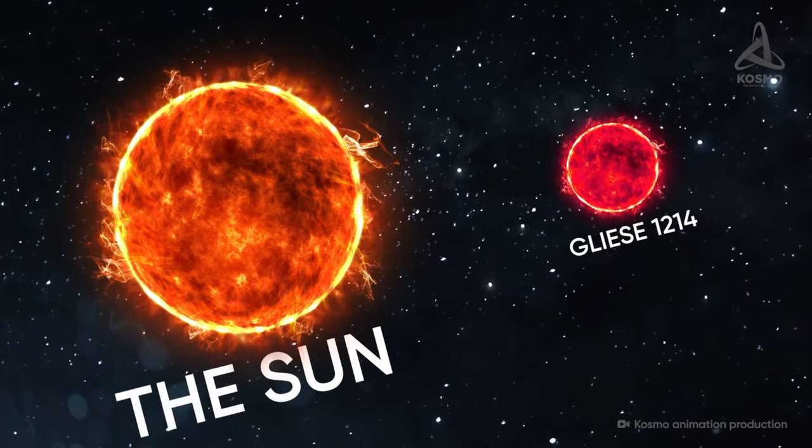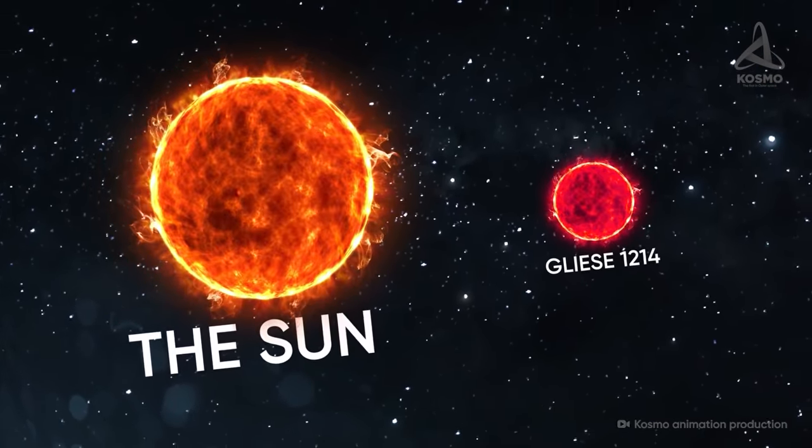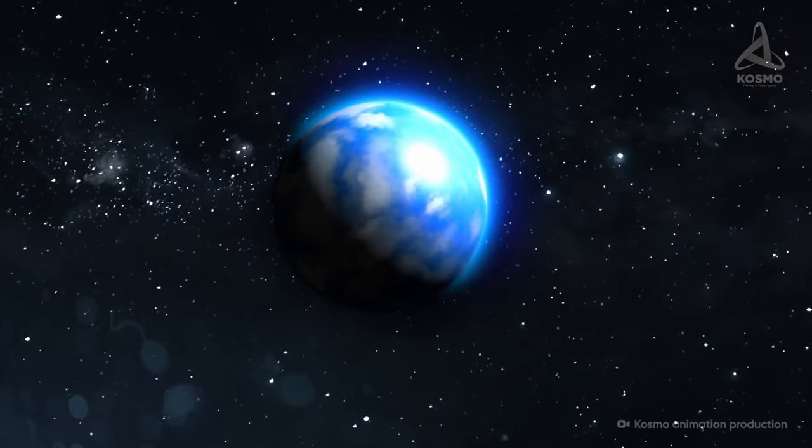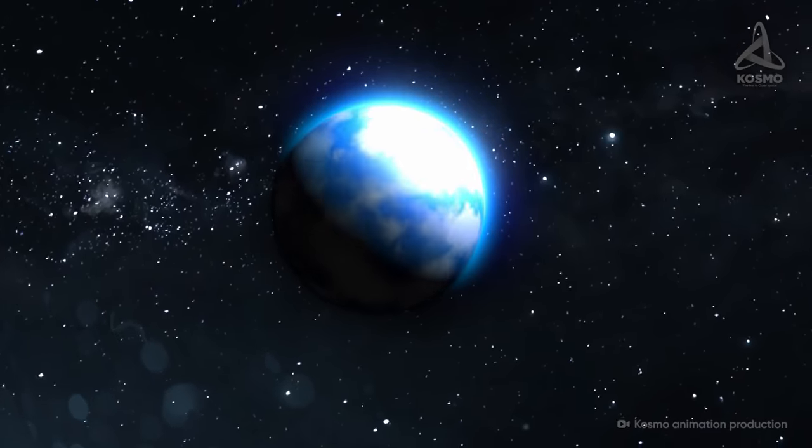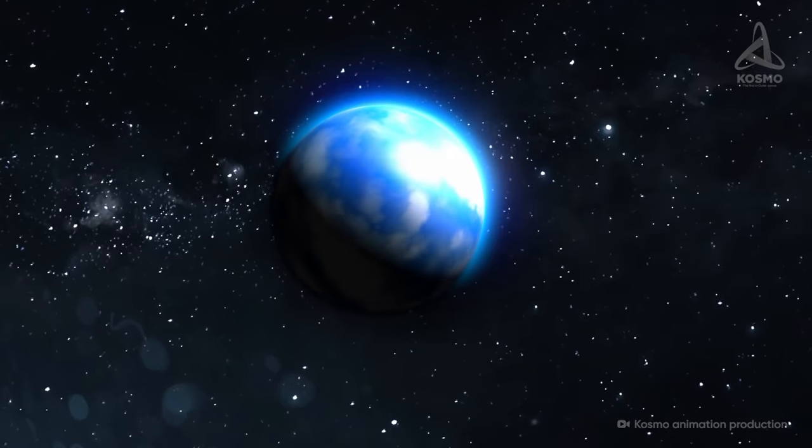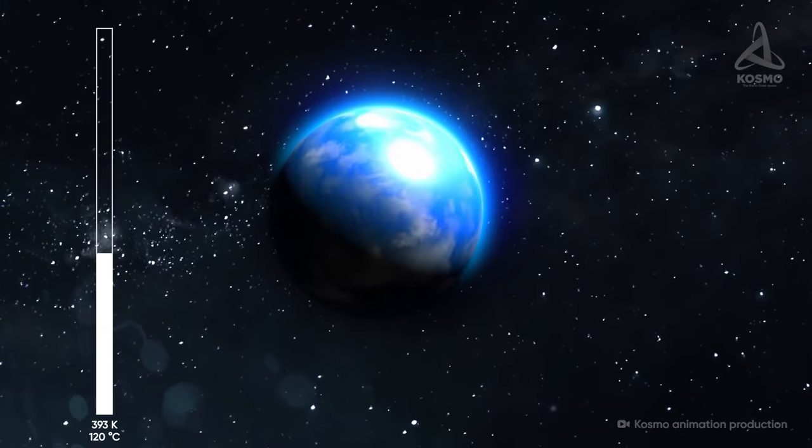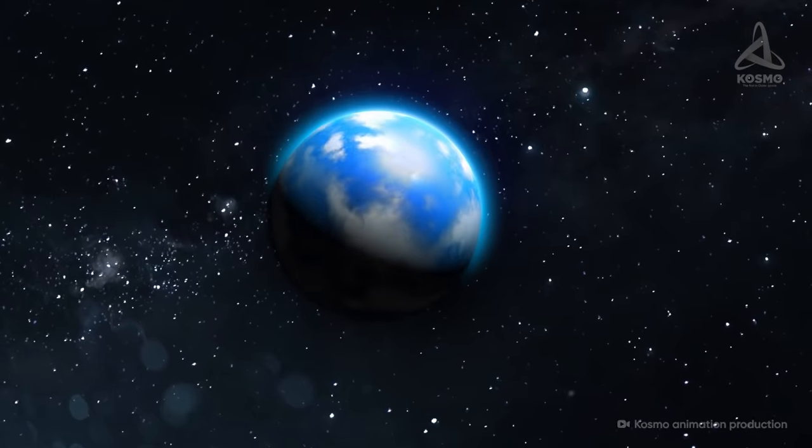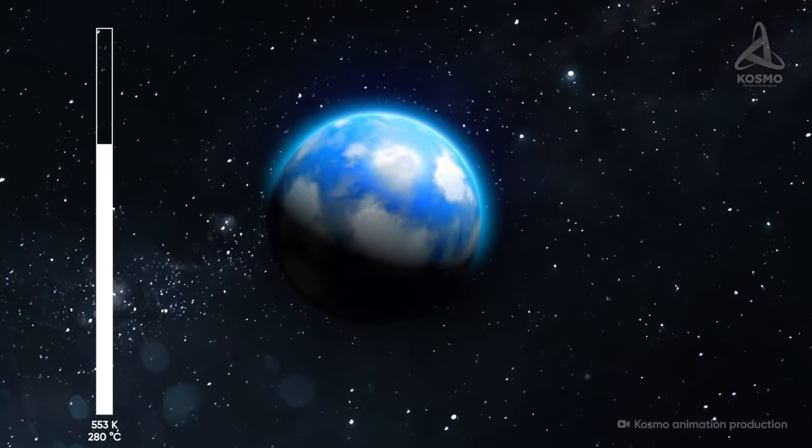The red dwarf Gliese 1214 may be 300 times dimmer than the Sun, but this incredible proximity to the star makes the climate on Gliese 1214 b scorching hot. Supposing the reflection coefficient of the surface of Gliese 1214 b is the same as that of Venus, the planet's surface temperature is supposed to be around 393 Kelvin or 120 degrees Celsius. If, on the other hand, the surface is darker, the temperature may reach as much as 553 Kelvin or 280 degrees Celsius.